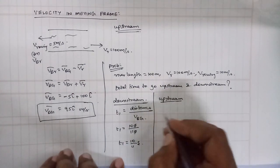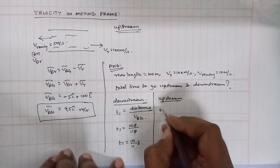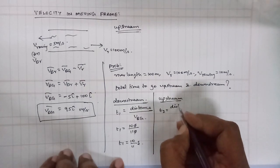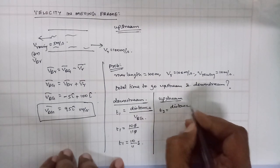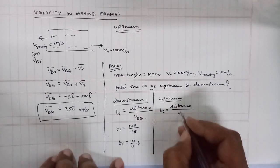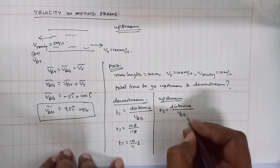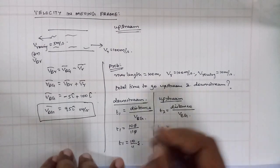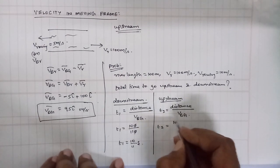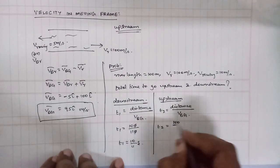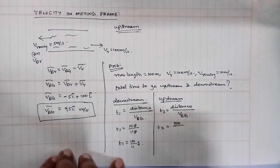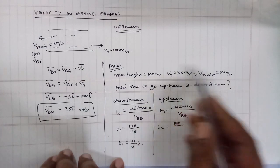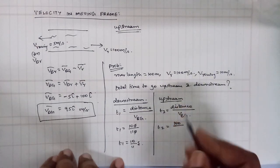To go upstream, we calculate the distance divided by the velocity of the boatman with respect to the ground. The river length is 100 meters. Going upstream, what is the velocity?